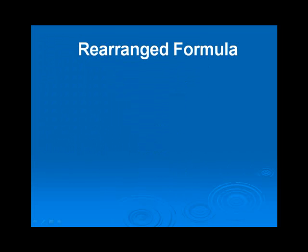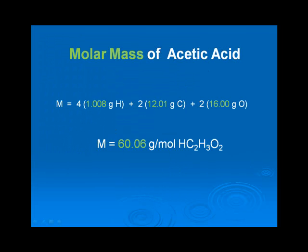We can rearrange the formula in order to solve for the number of moles n if we know the mass and the molar mass. By looking up the atomic masses of the elements that make up acetic acid, we can determine that the molar mass of acetic acid is 60.06 grams per mole.